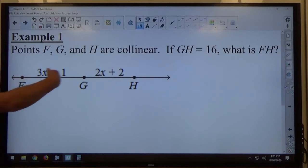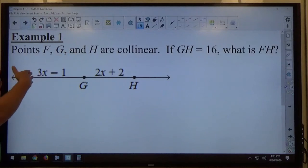So we got this line here. Points F, G, and H are all on that line, okay? And again, the fact that they're collinear means that they're on this same line here.